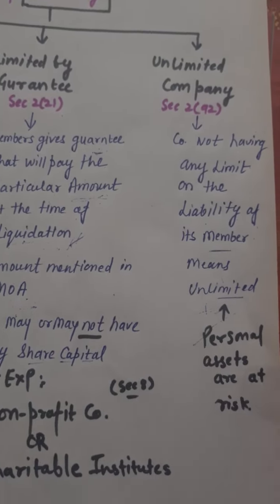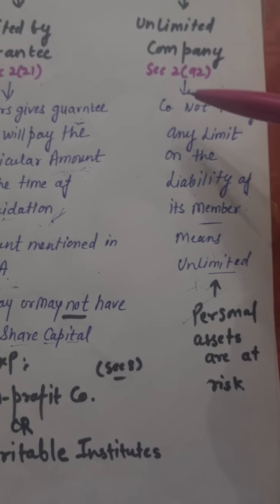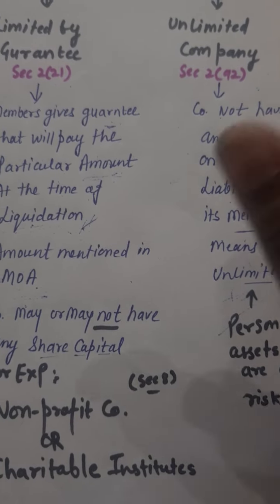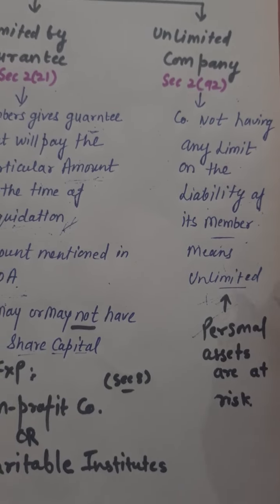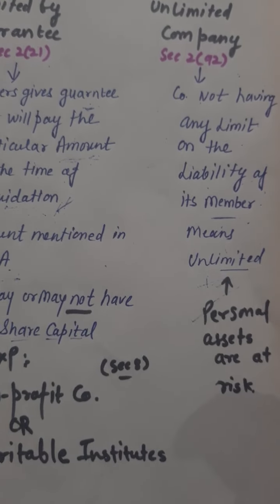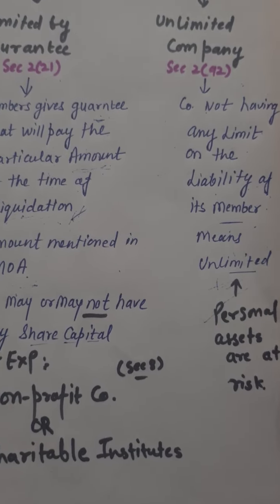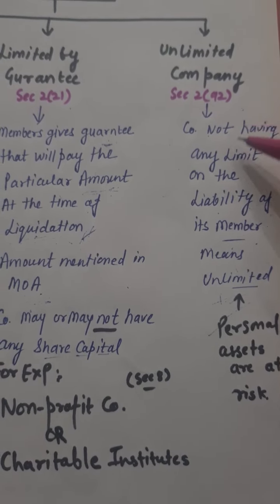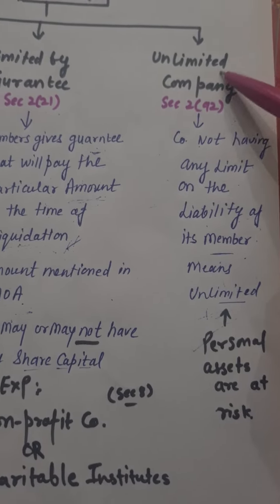Next, unlimited company, defined under Section 2(92). In an unlimited company, there is no limit on the liability of its members — they have unlimited liability. Personal assets are at risk. Unlimited companies are similar to sole proprietorship or partnership firms, where members must pay their debts and creditors from personal assets.